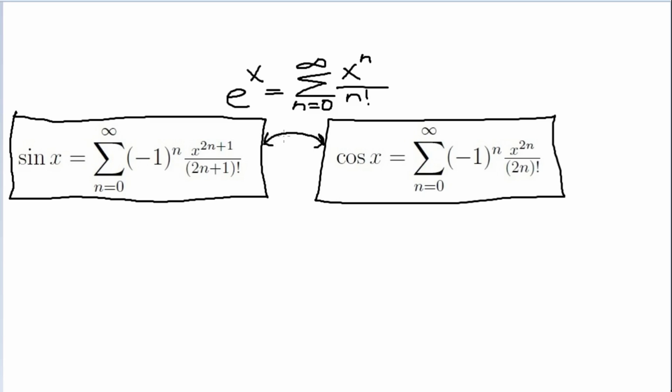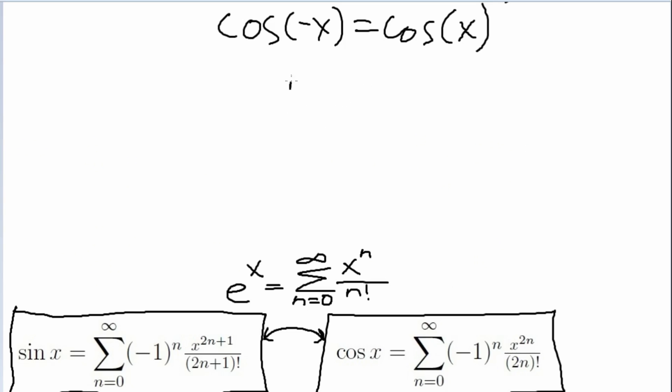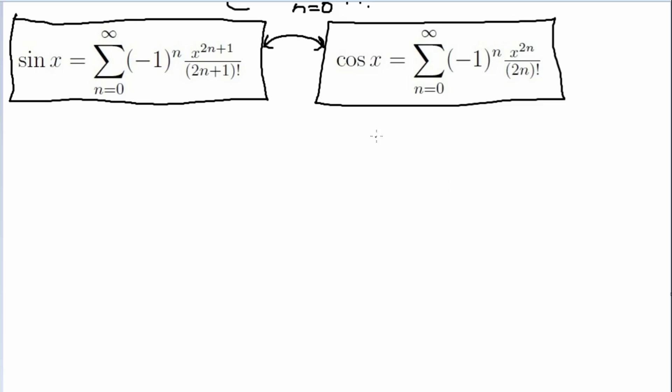So let's start with cosine of negative x. You can see here, since we have an even exponent, that it doesn't really matter if we put in, for example, a negative 3 for x, or a 3 for x.